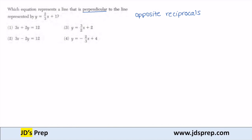So looking at the line that was given, y is equal to 2 thirds x plus 1. This is in slope intercept form, right? y equals mx plus b. So I already know the slope of this line is 2 thirds.